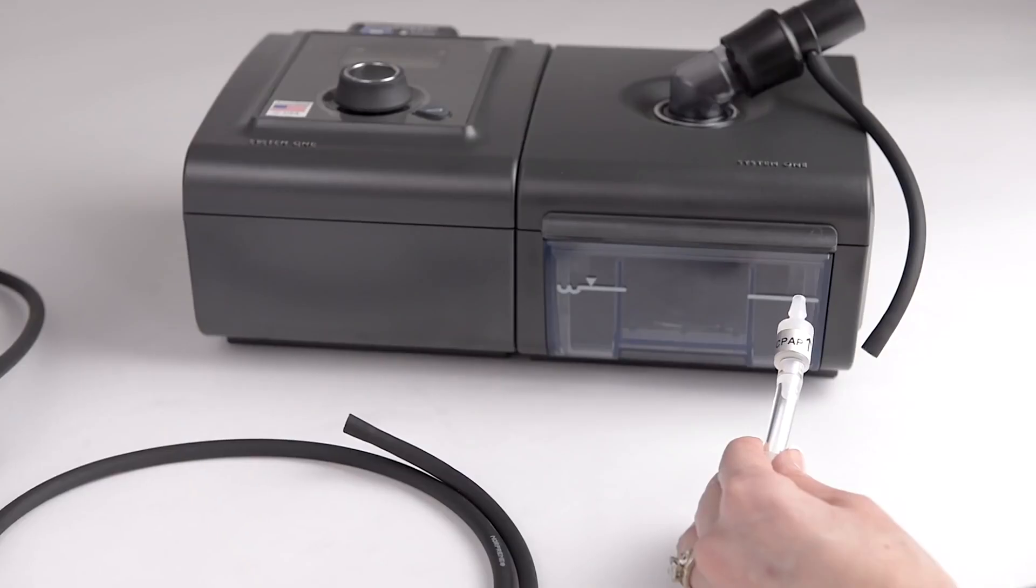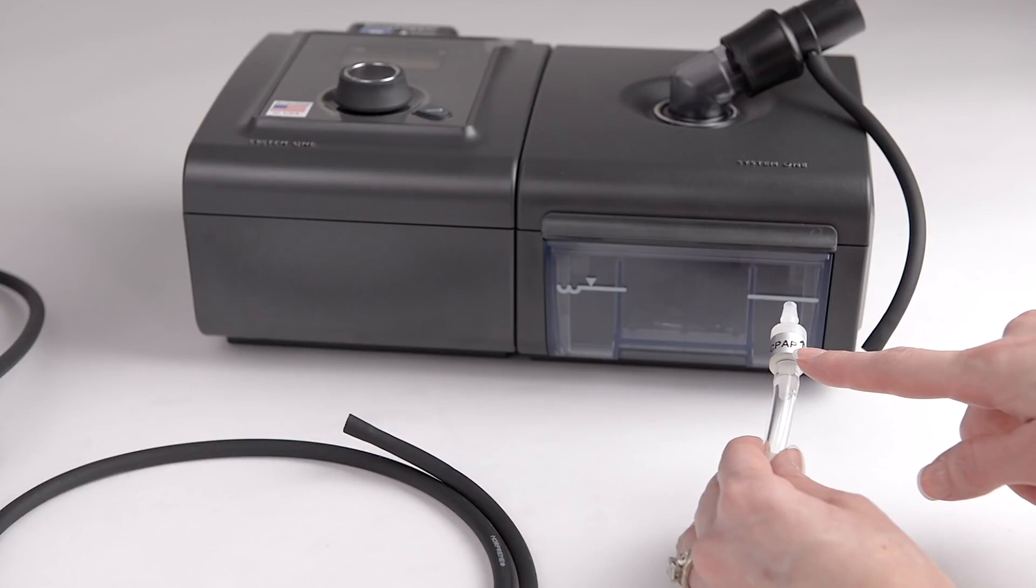The direction of your new check valve is critical. Your SoClean will not work if it's installed facing the wrong direction. The end of your new check valve has a label with two arrows that should be pointing toward your CPAP machine.